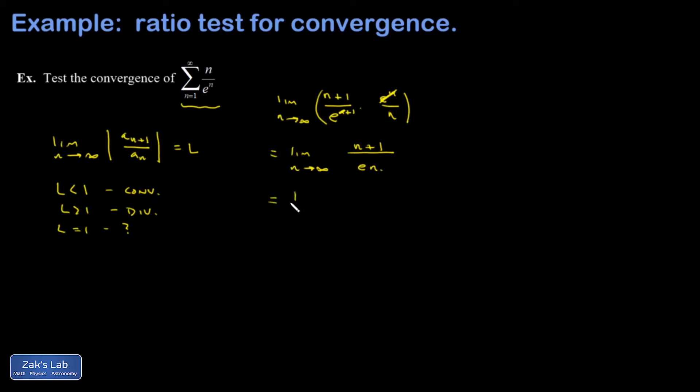I could pull the 1 over e out in front and then divide each of these terms by n, and I end up with 1 plus 1 over n. The 1 over n unambiguously goes to 0, and I'm left with just 1 for the limit with that 1 over e out in front.